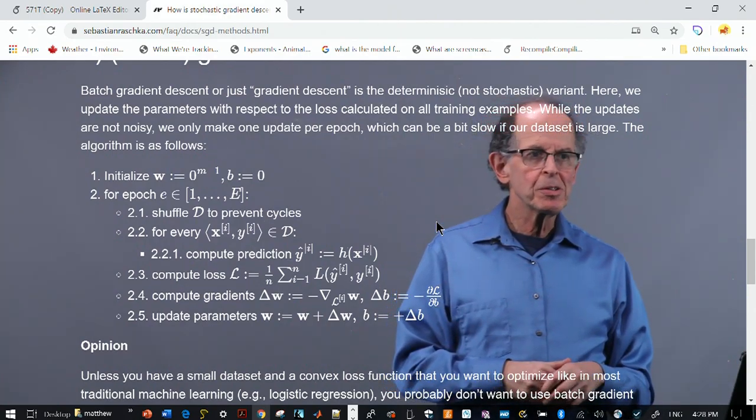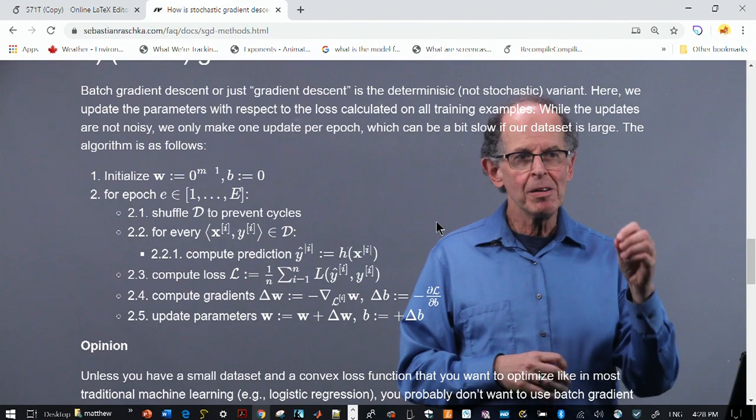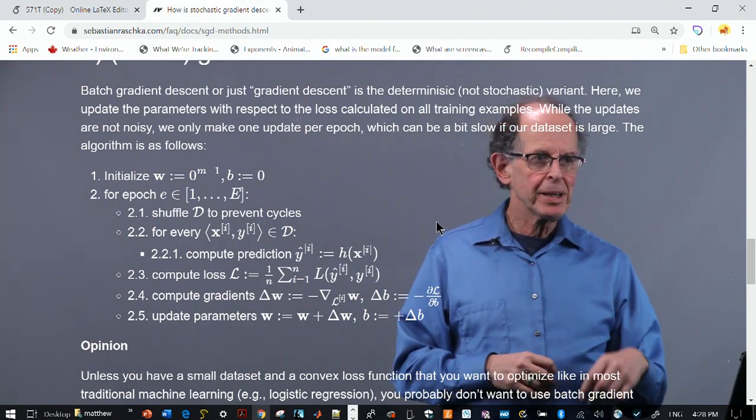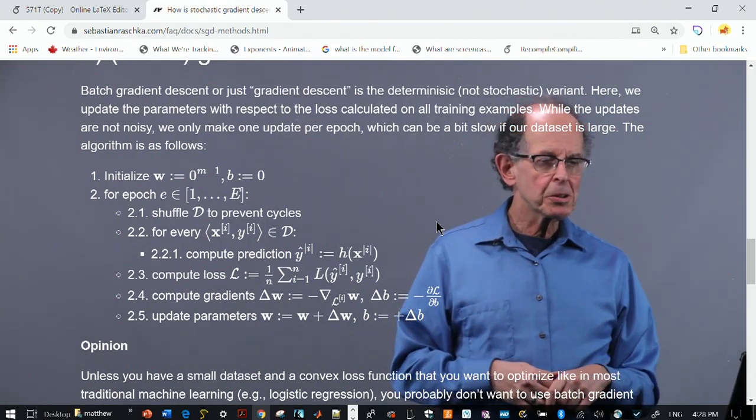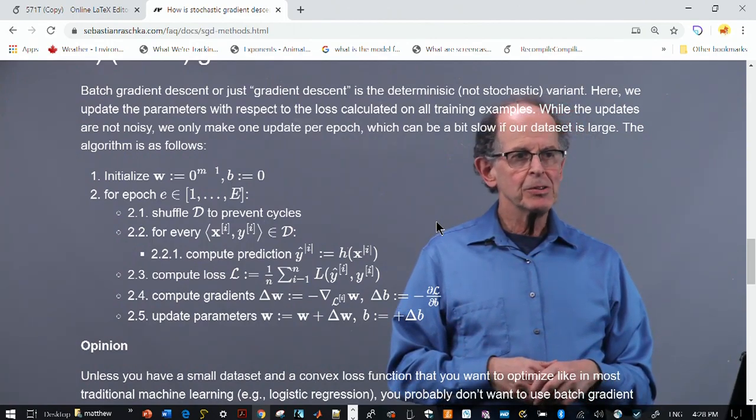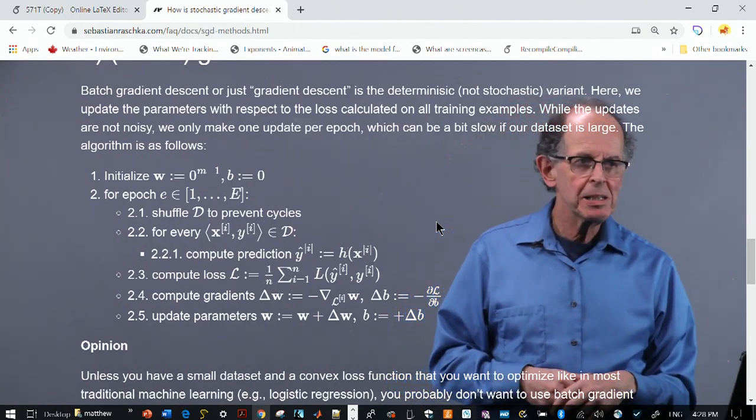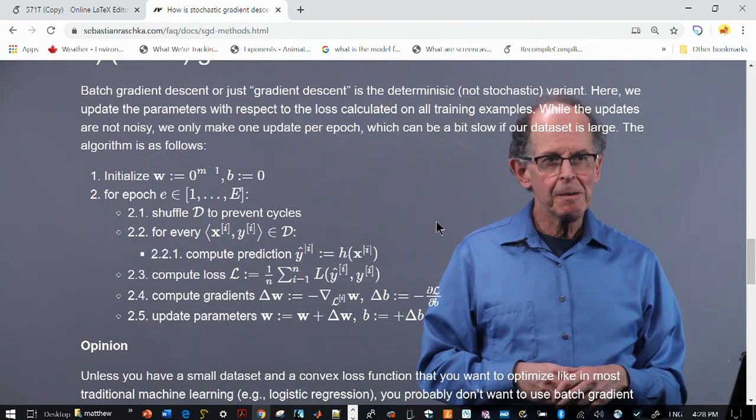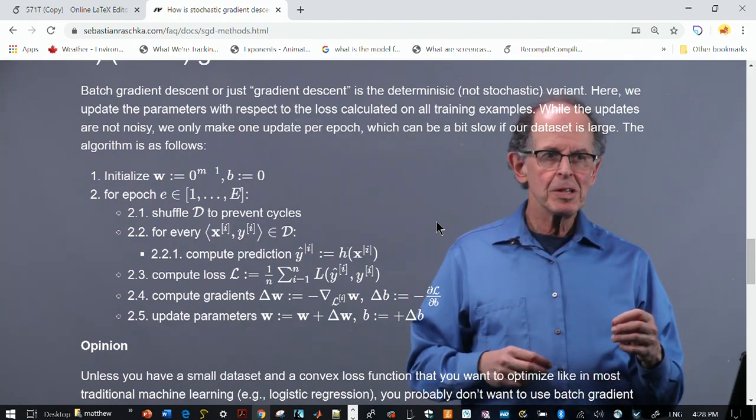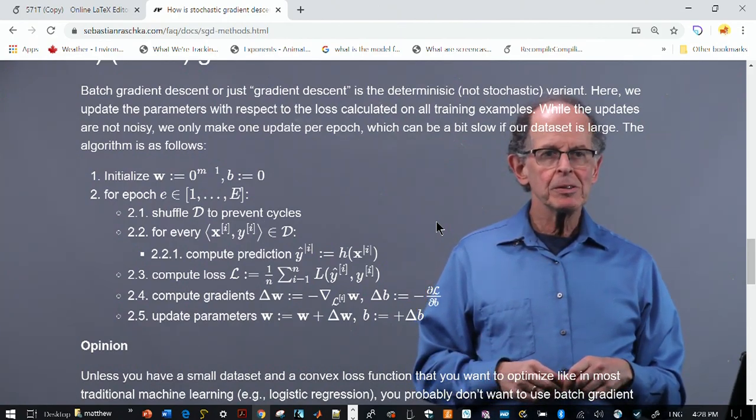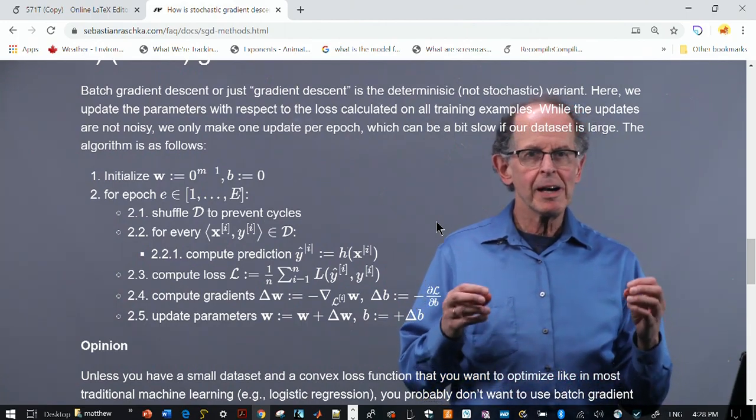It's summed over all the losses for all the data that you've picked. Again, we take the gradient of the loss function, minus sign, same with delta B, and then we update. So the difference is in steps 2.2 and 2.3, the entire data set.